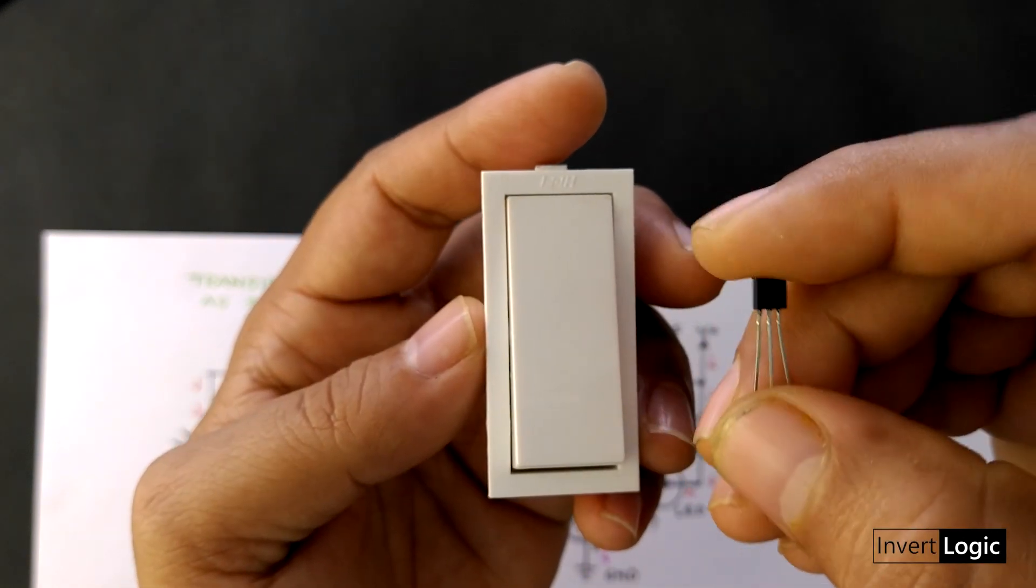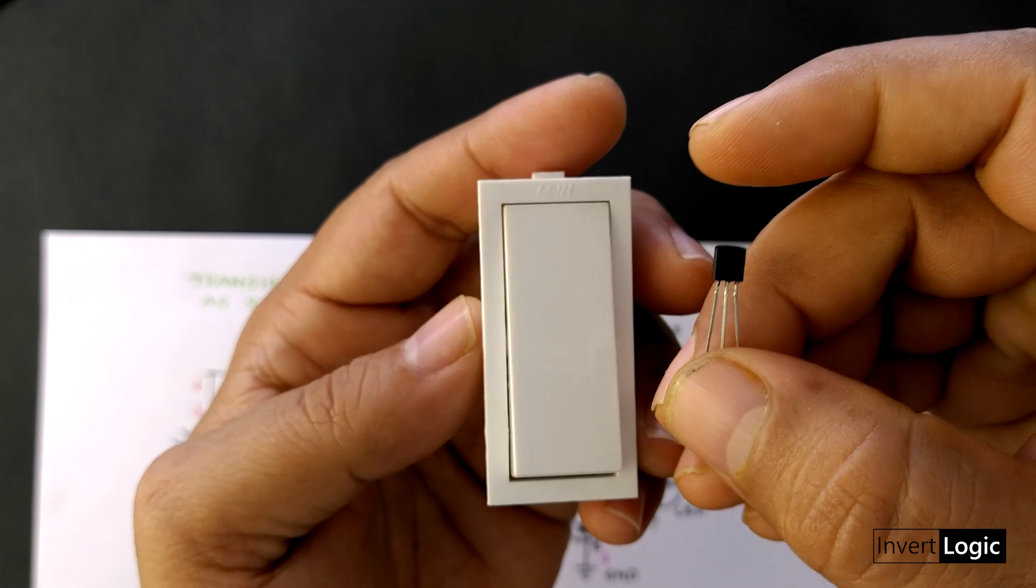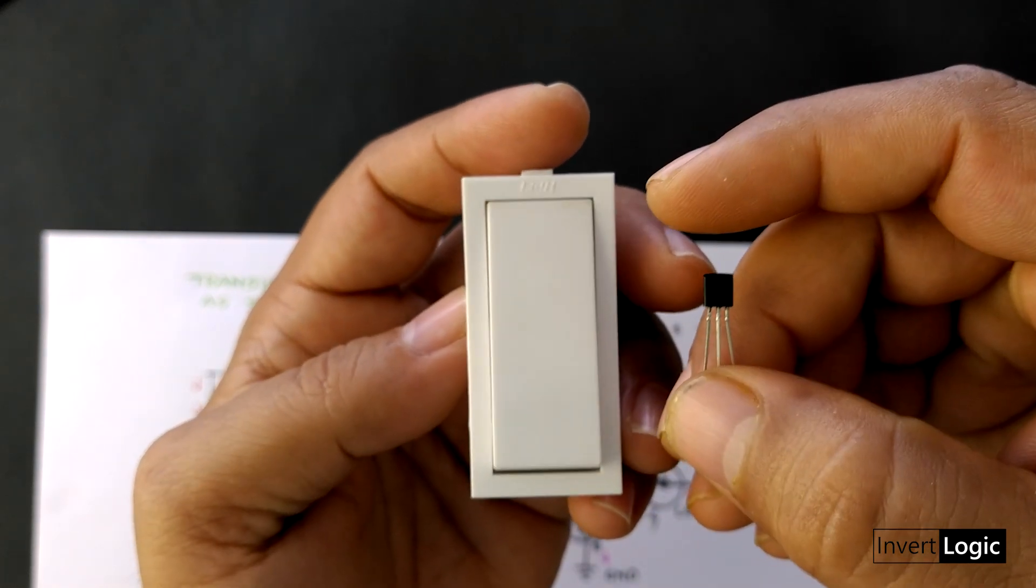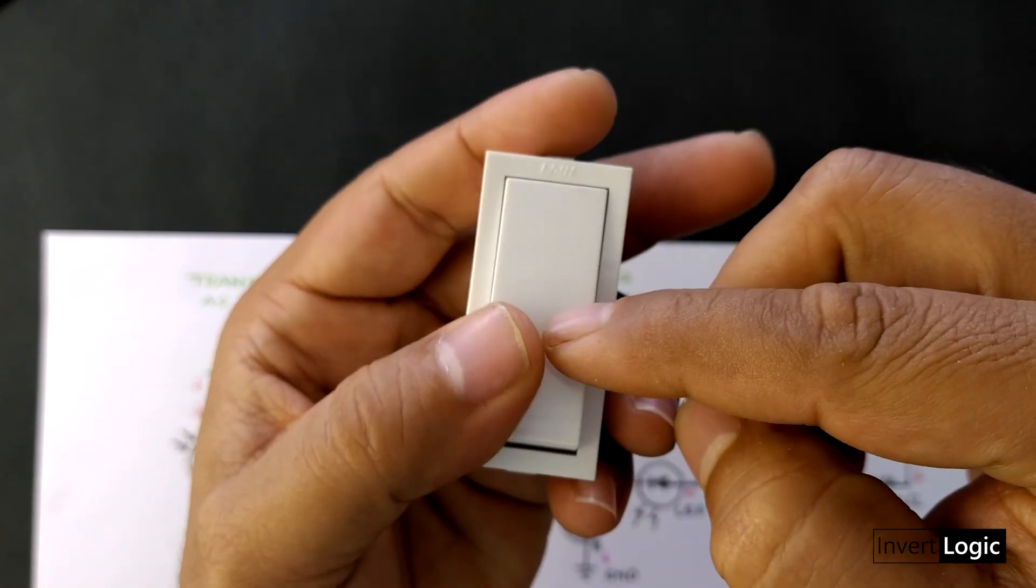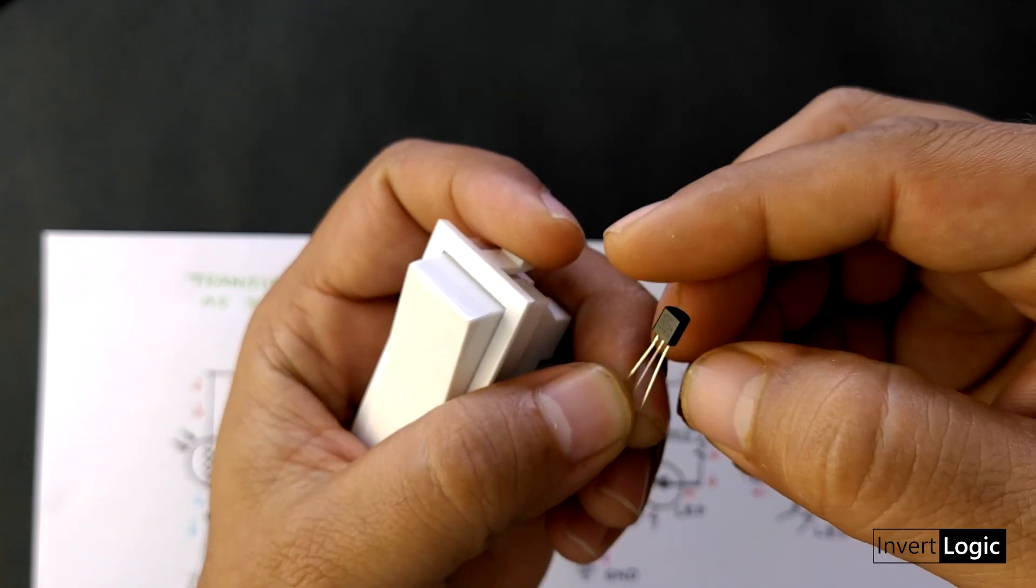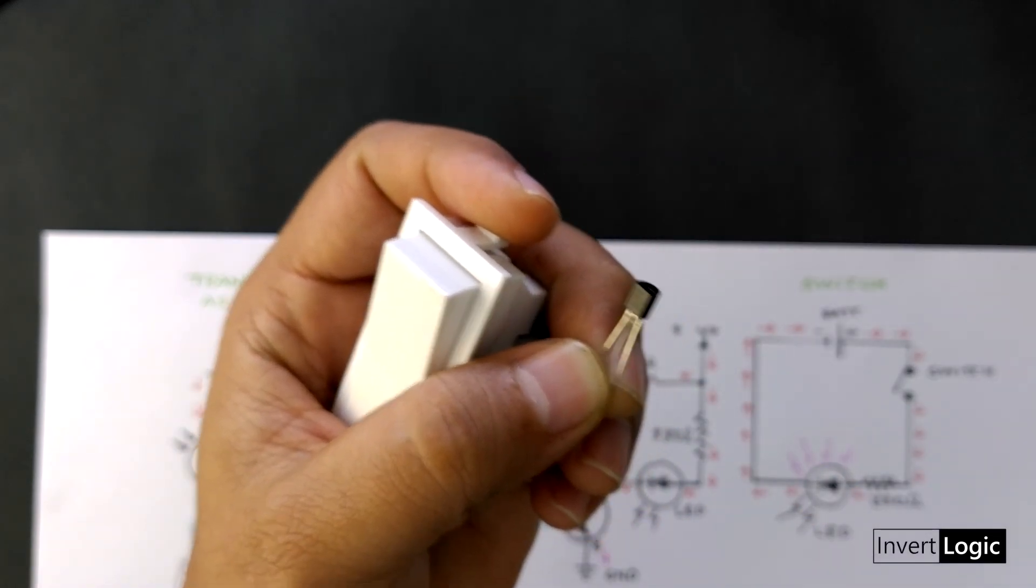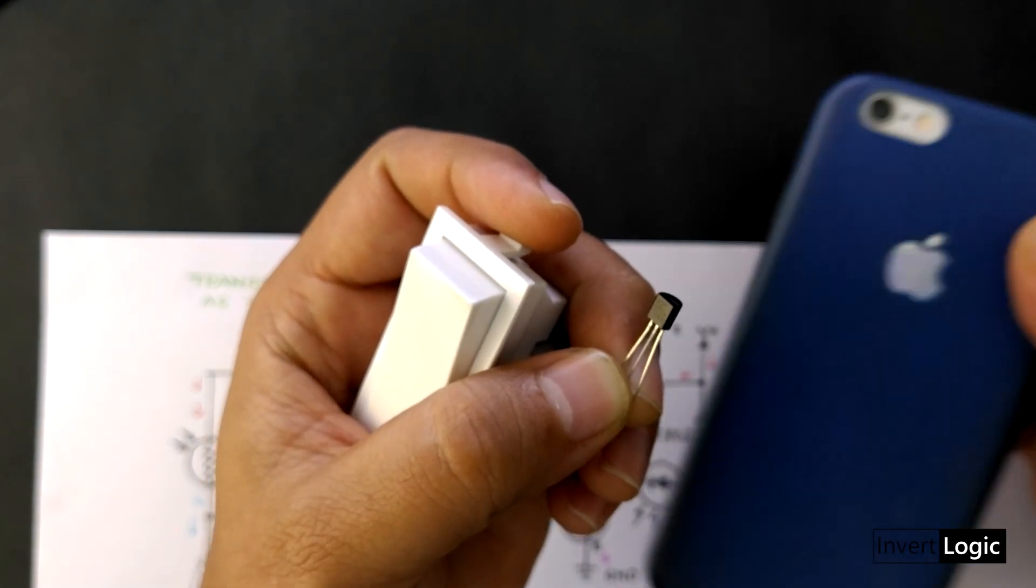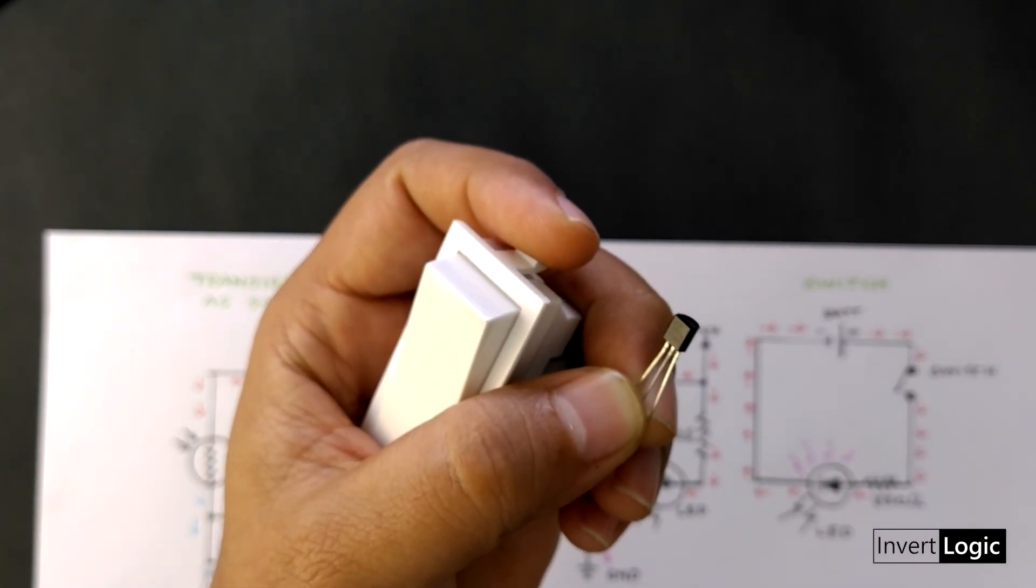This is called a transistor. This also works like a switch and it is present mostly in every electronic device that we use daily from computers to smartphones and in fact it is the backbone and building block of today's modern electronics.